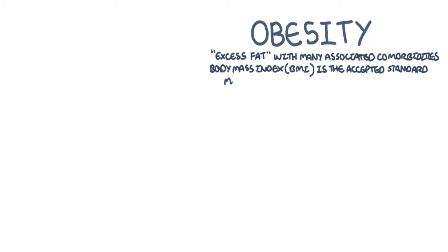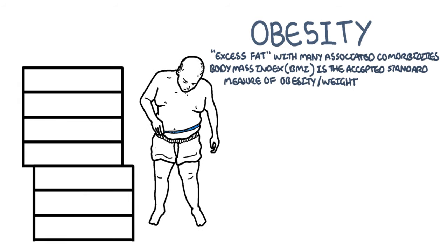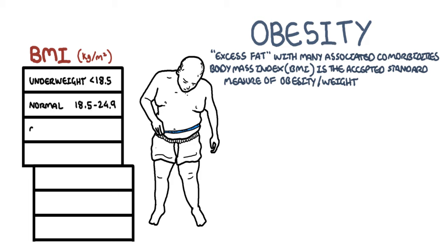The Body Mass Index or BMI is the accepted standard measure of obesity and weight. BMI is represented by kilograms per meter squared. Being underweight has a BMI of less than 18.5, a normal BMI is 18.5–24.9, overweight is 25–29.9, and obesity is greater than 30, which is further divided into three different classes.